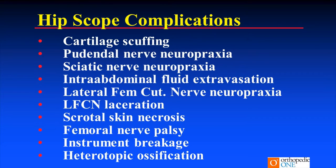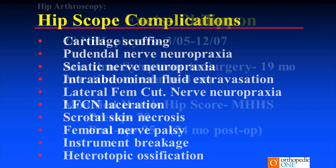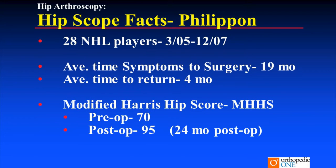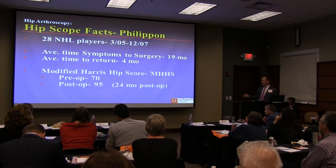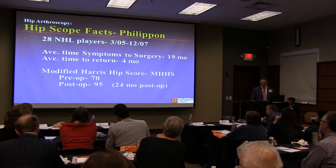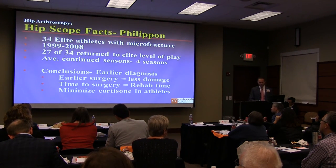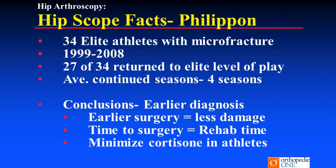There are potential complications, but we take steps to minimize them. Numbness is probably the most common and is transient. Philippon's study of 28 NHL players: average time to surgery was 19 months — longer than ideal, but these are NHL players who keep playing. Significant improvement in modified Harris Hip Score from 70 to 95 — it works in high-level athletes. Another Philippon study of 34 elite athletes with microfracture: 27 of 34 returned to elite level, though you have to consider these athletes may have returned anyway.